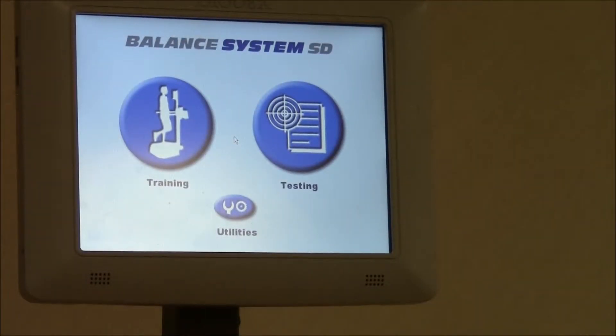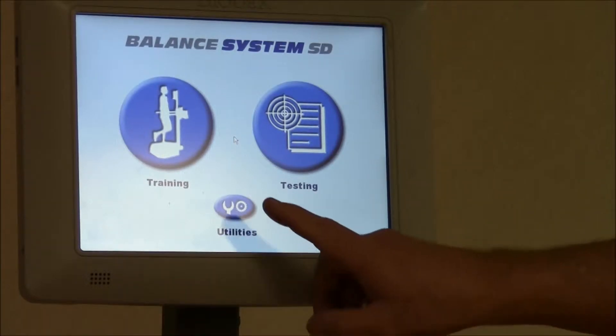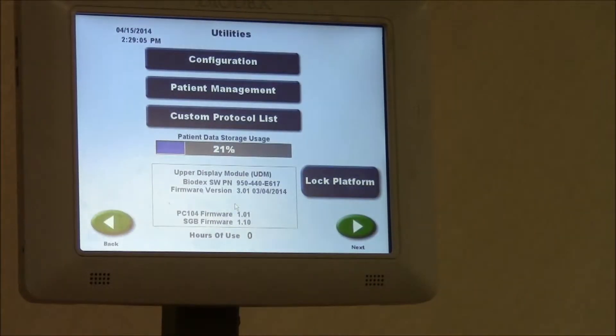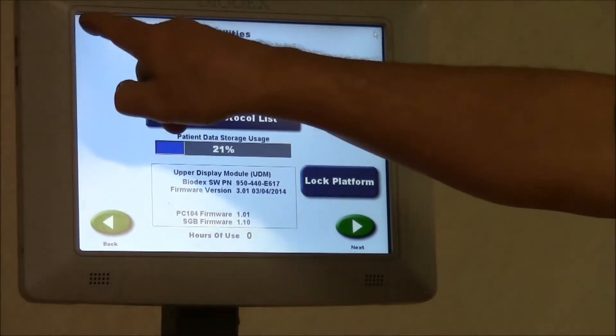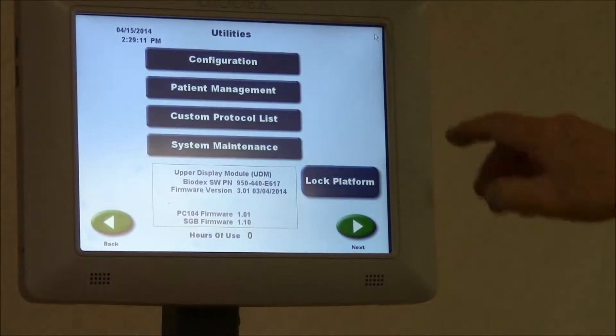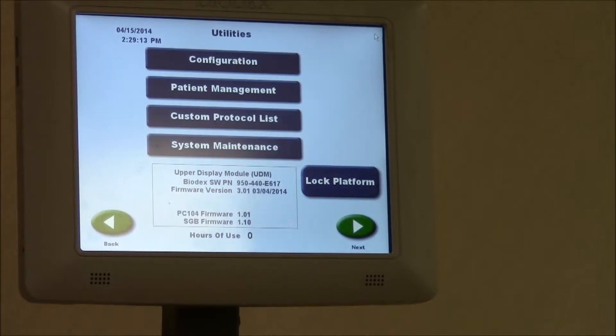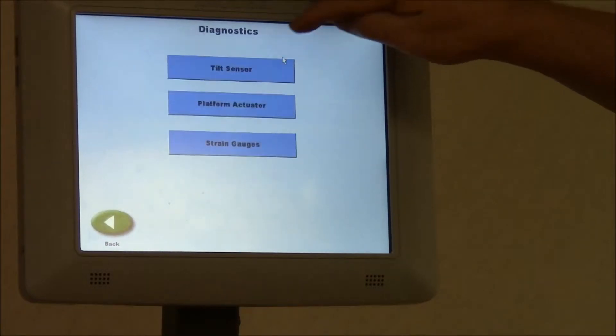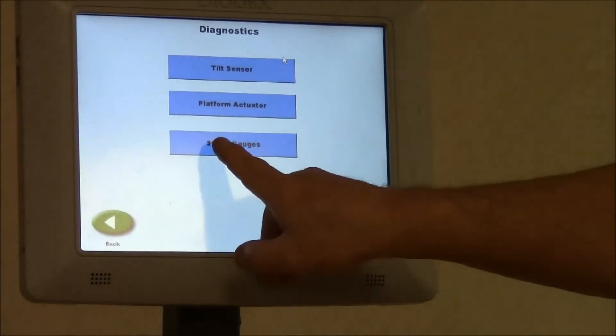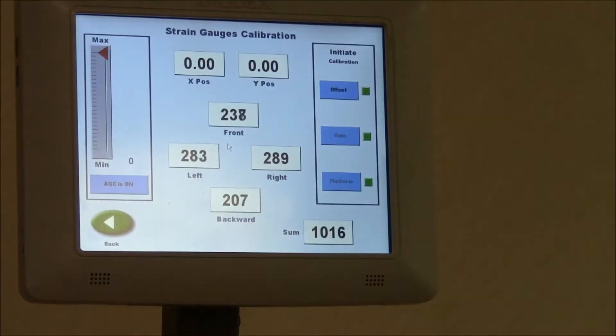Now we're going to do a strain gauge calibration procedure. You're going to click on utilities. You have to hit the upper right, upper left, upper right to get into system maintenance. Once you're in system maintenance, you're going to click on diagnostics. The bottom one says strain gauges. Click on that. And this is where we do the strain gauge calibration.